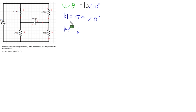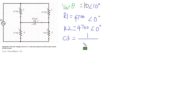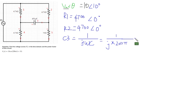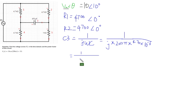For R2 it's similar — 4.7∠0. For capacitor C3, the impedance equals 1 divided by jωC. We also need to write it in the phasor domain. The omega is 200π, and the C value is 470 × 10⁻⁶. For C3, it just has an imaginary part, so the magnitude is 1 divided by 200π × 470 × 10⁻⁶.